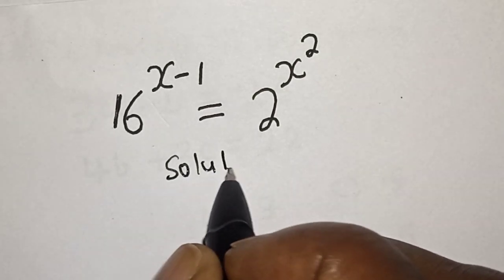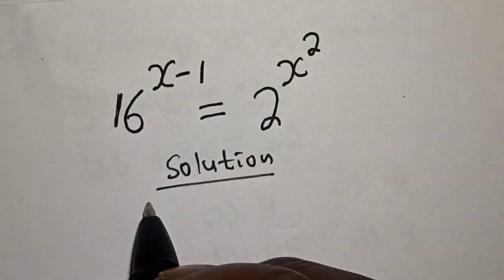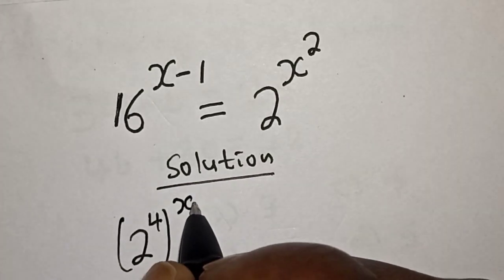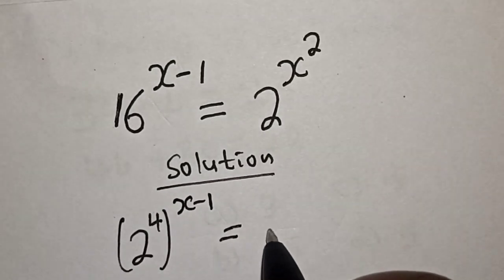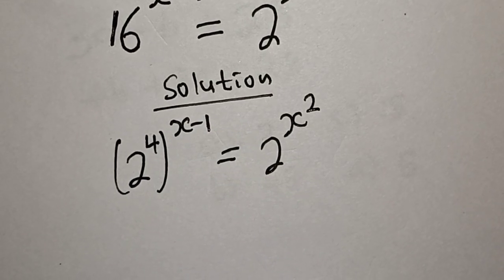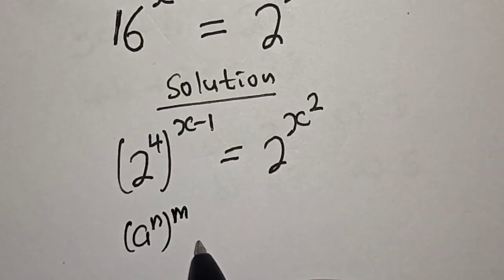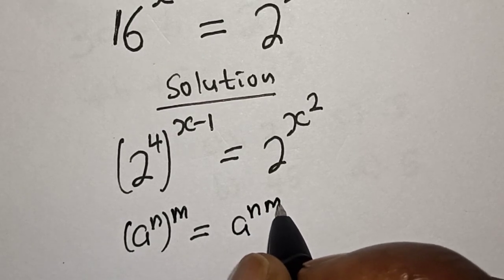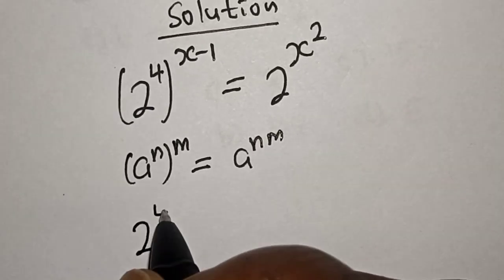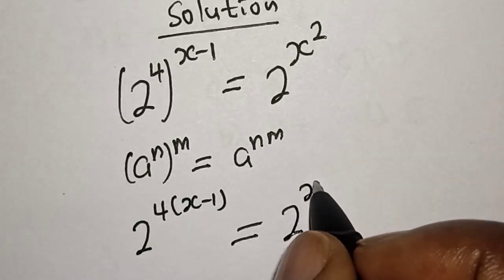Solution. 16 raised to power x minus 1 can be written as 2 raised to power 4, raised to power x minus 1, is equal to 2 raised to power x squared. Remember this rule: if you have a raised to power n raised to power m, this is equal to a raised to power n times m. Then this becomes 2 raised to power 4 bracket x minus 1, equal to 2 raised to power x squared.